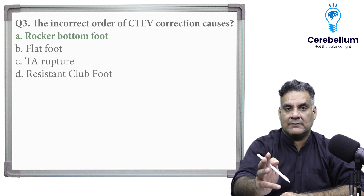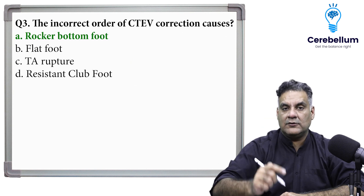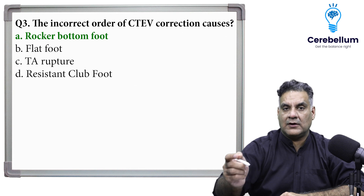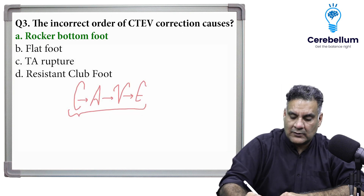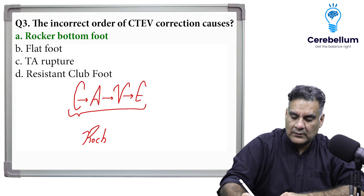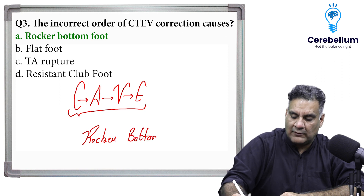Number three: if you do not follow the order, what will happen? Rocker bottom foot will happen. Rocker bottom foot is the opposite of CTEV.